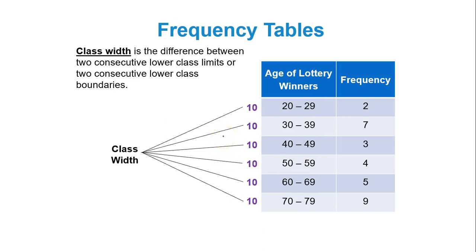The class width is the distance or the difference between the lower class limits of two consecutive classes or the upper class limits of two consecutive classes. Like 20 and 30, there's a difference of 10 there. 30 and 40, there's a difference of 10. 40 and 50, there's a difference of 10 there. The class width is 10 in this case. Remember, you look at the lower class limits of two consecutive classes and subtract.